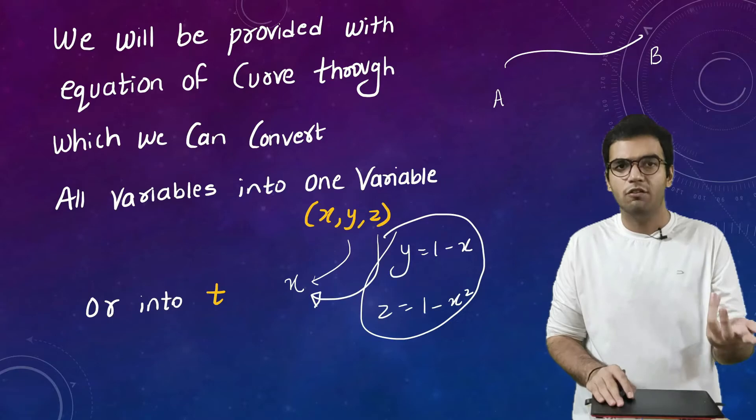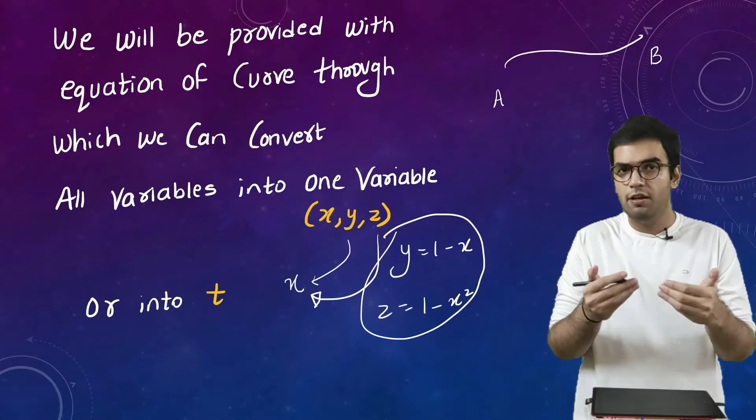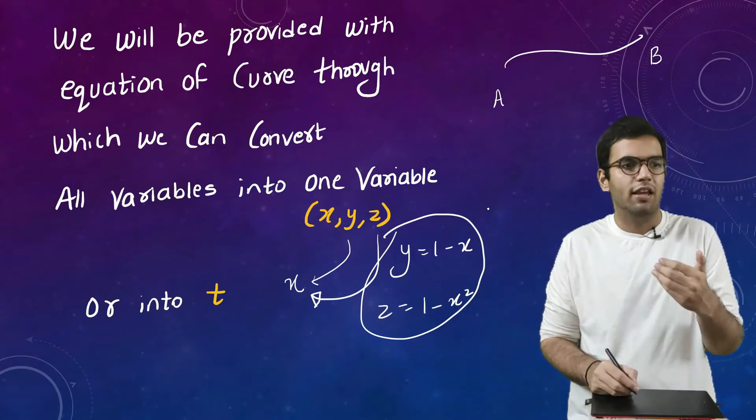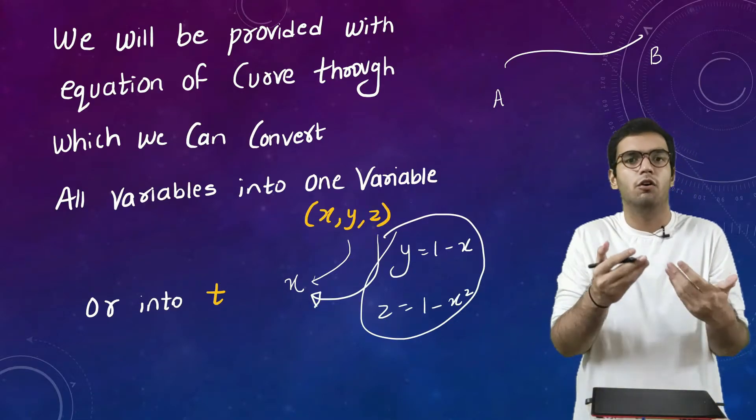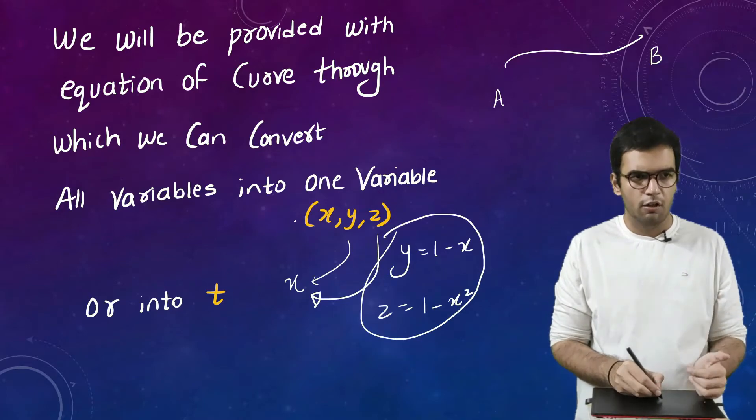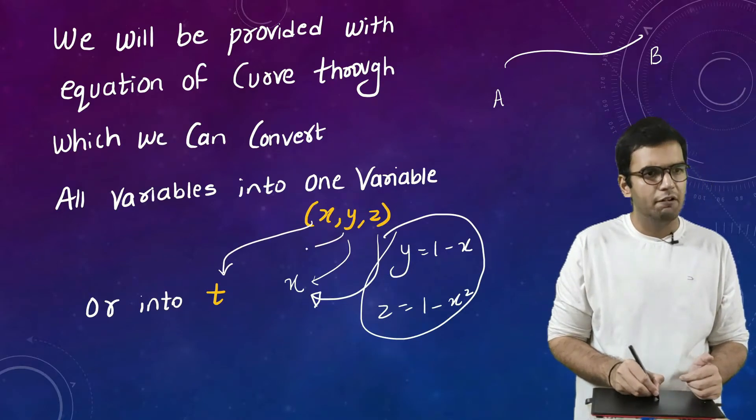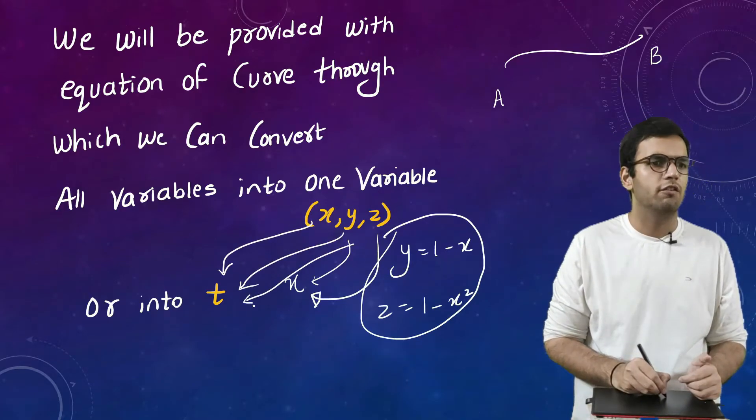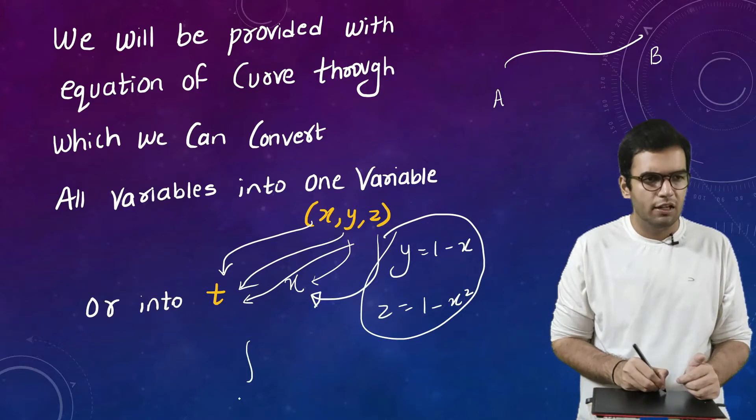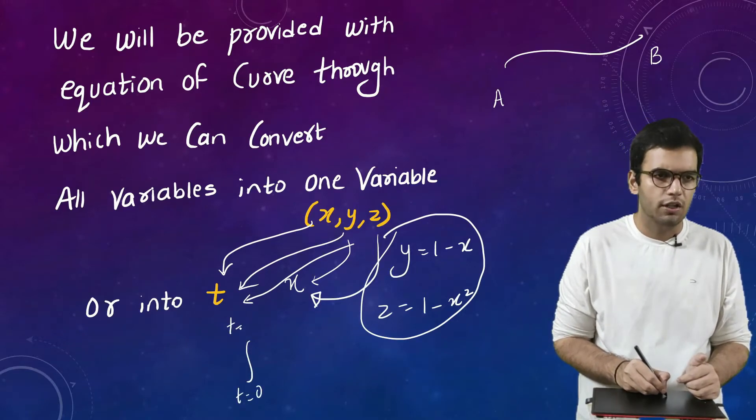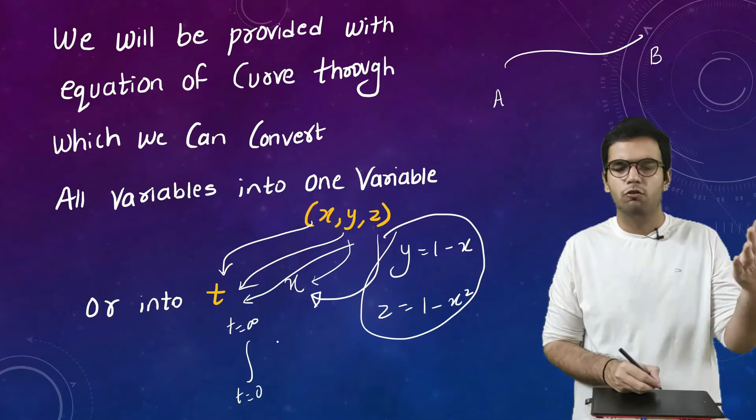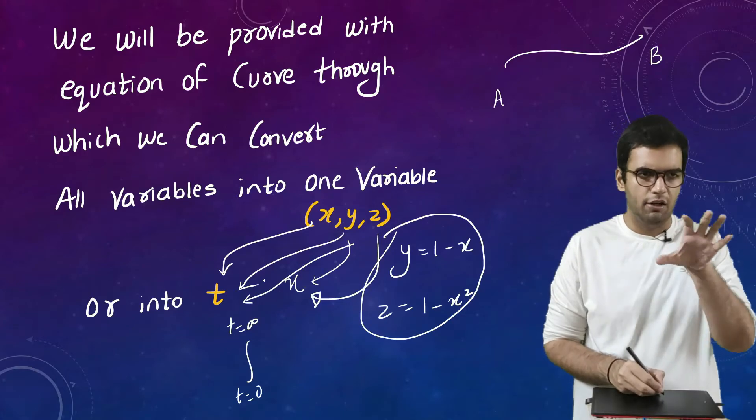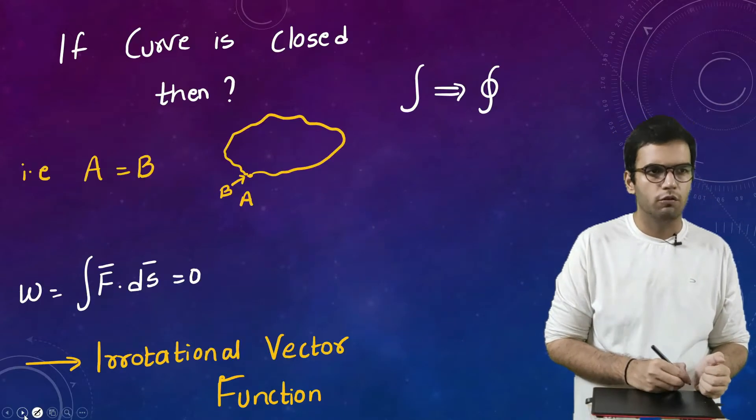So basically if I write everything in terms of x, so then I can use the limits of x, right? This is one way of solving the numericals. The second way to solve the numericals is by converting the variables, all the three variables, into some fourth variable t. So I will convert x into t, I will convert y into t, I will convert z into t. And I will give the limits as t is equals to 0 to t is equals to something like infinity or whatever I have in the question. Don't worry, we will solve sums also then I will show you how we use these.